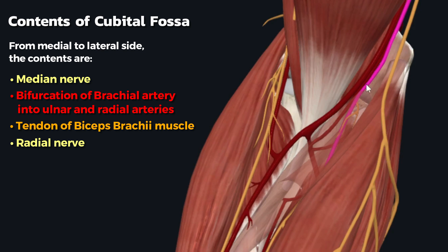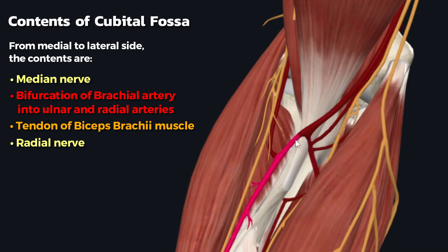The median nerve passes between the two heads of the pronator teres muscle to enter the forearm. The brachial artery bifurcates into its two branches — the ulnar artery and the radial artery — as soon as it enters the cubital fossa. The tendon of the biceps brachii muscle inserts onto the radial tuberosity and through the bicipital aponeurosis into the deep fascia of the forearm. The radial nerve divides into its superficial and deep branches as soon as it enters the lateral aspect of the cubital fossa.